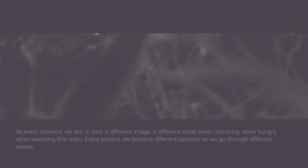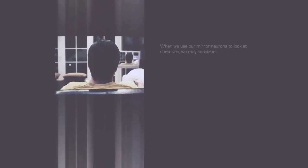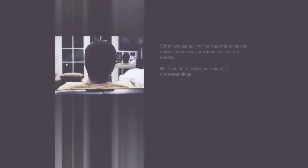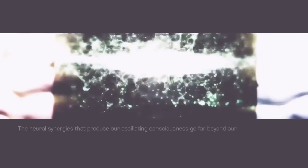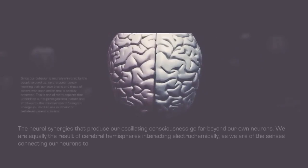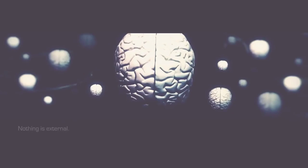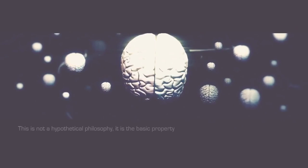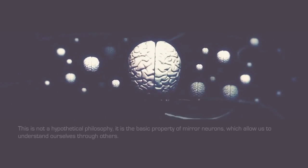When we use our mirror neurons to look at ourselves, we may construct the idea of identity. But if we do this with our scientific understandings, we see something completely different. The neural synergies that produce our oscillating consciousness go far beyond our own neurons. We are equally the result of cerebral hemispheres interacting electrochemically, as we are of the senses connecting our neurons to other neurons in our environment. Nothing is external. This is not a hypothetical philosophy. It is the basic property of mirror neurons, which allow us to understand ourselves through others. Seeing this neural activity as your own while excluding the environment would be a misconception.